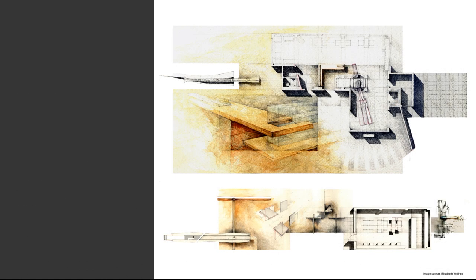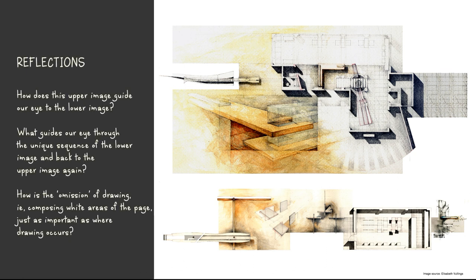In this composition by student Elizabeth Bullings, we have already discussed the upper collage image of the overall composition. Now reflect upon how this upper image guides the eye to the lower image through its own unique sequence and back again. Pause the video to give yourself time to reflect on the answer, and then begin the video once again to discuss a fourth and final composition.